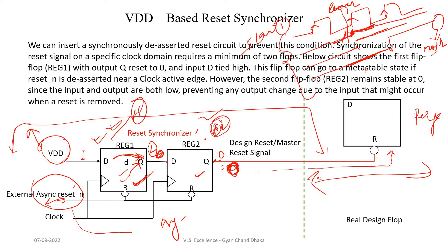So zero will be propagating to flip-flop two's output. That means there is no reason flip-flop two can go into meta-stable state. So if the reset deassertion happens near the active edge of the clock, flip-flop one can go into meta-stable state, but flip-flop two will never go into meta-stable state. By the time of the next clock edge, flip-flop one output will settle — it will have enough time to settle before the next clock edge. It will start meta-stable and finally settle to zero or one. The flip-flop two output is fed to our design flip-flops, so this circuit avoids the meta-stability problem caused by asynchronous reset deassertion.